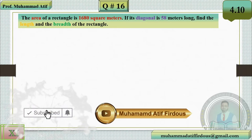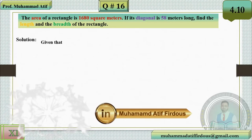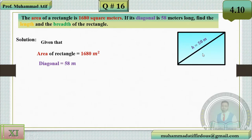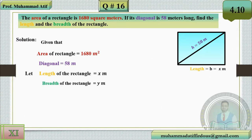To find the length and breadth of the rectangle, first, given that the area of this rectangle is 1680 square meters, and its diagonal is 58 meters — you can see this on the diagram. Suppose the length of the rectangle is x meters and the breadth is y meters.